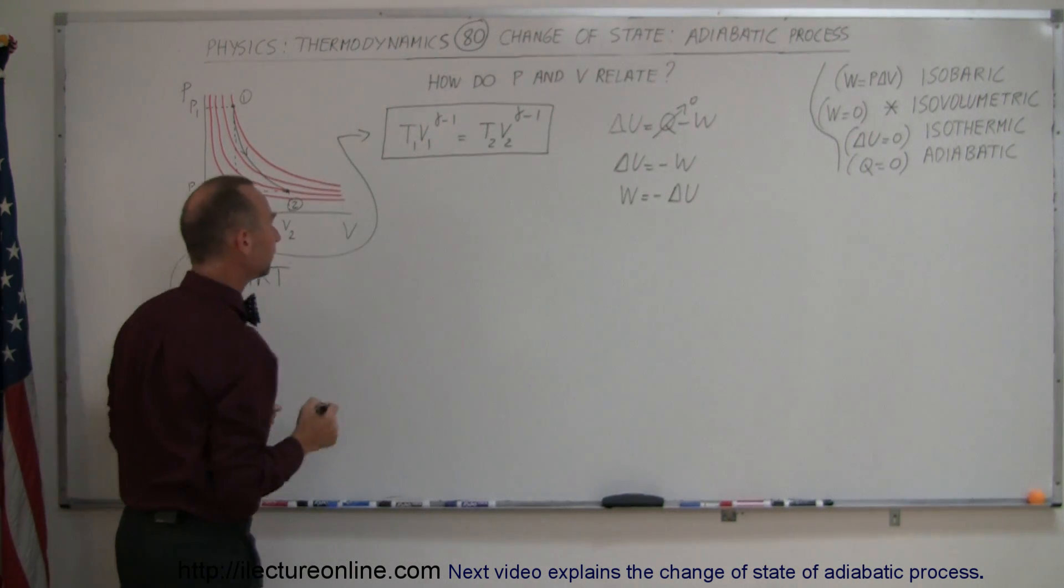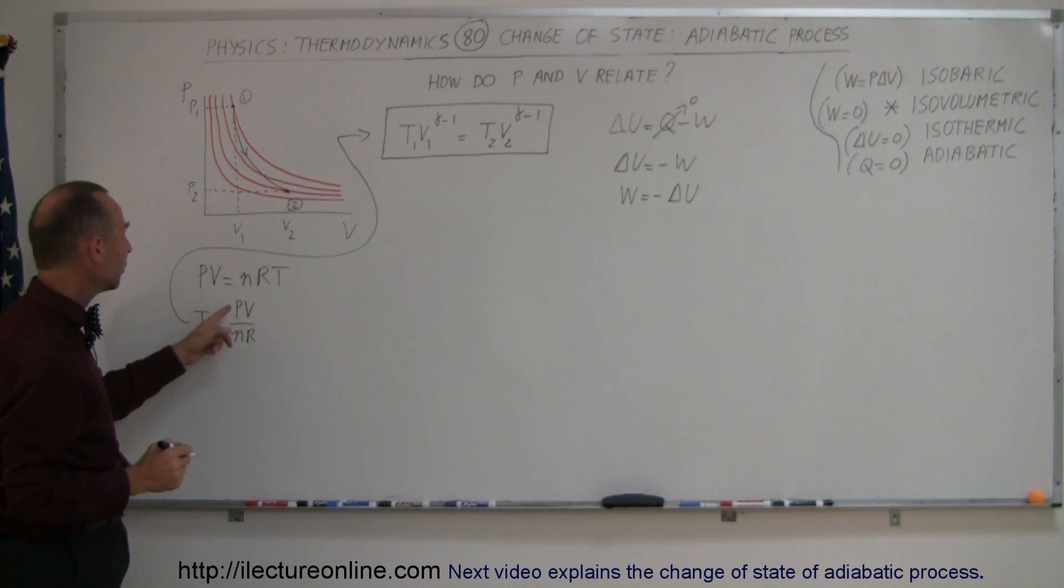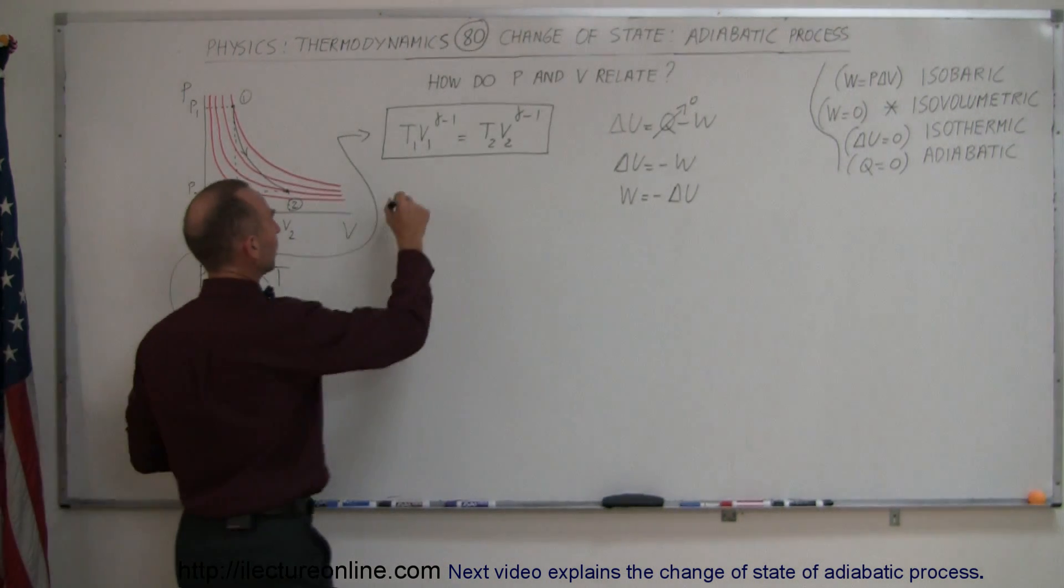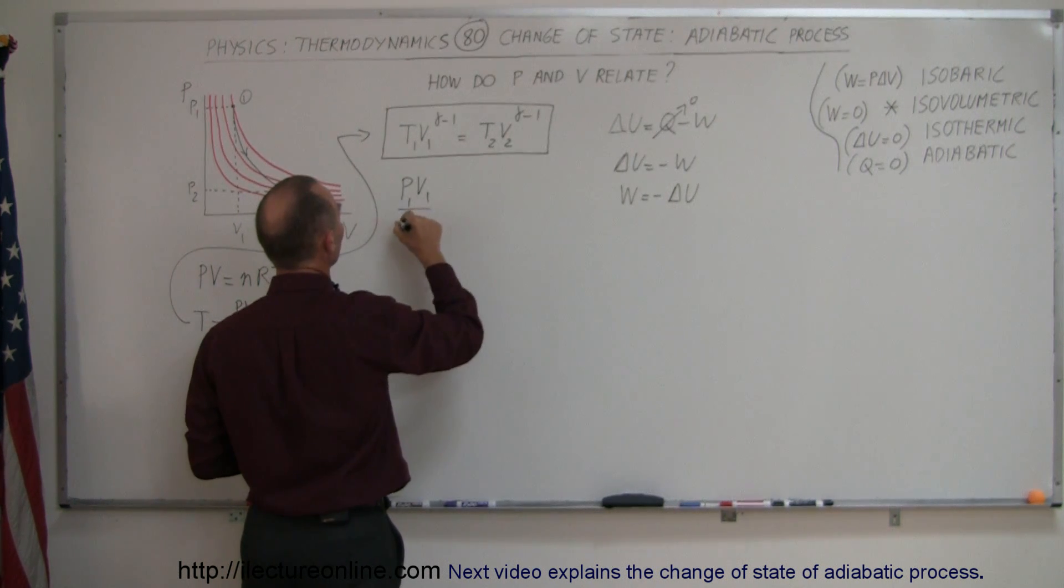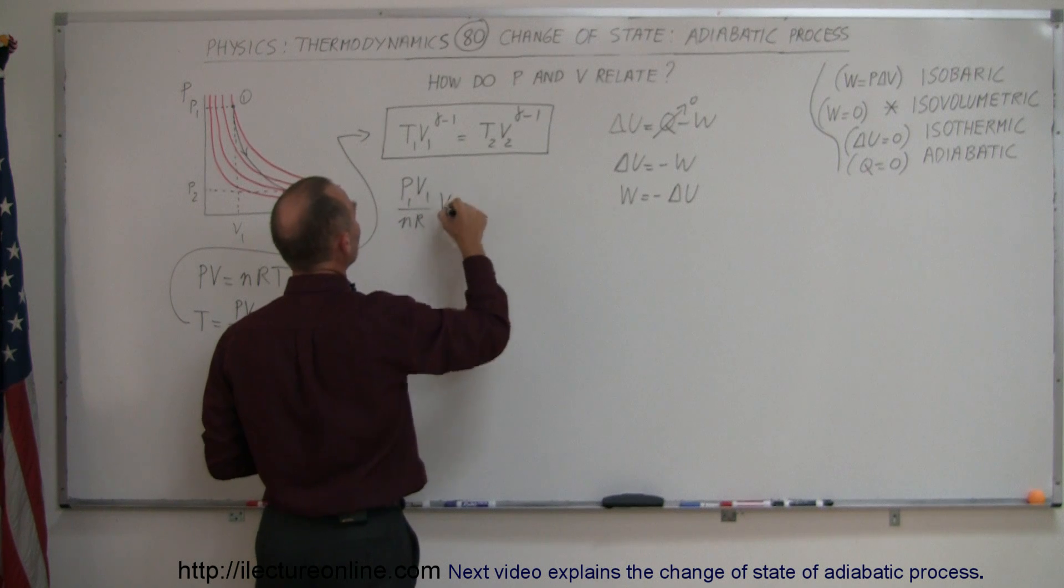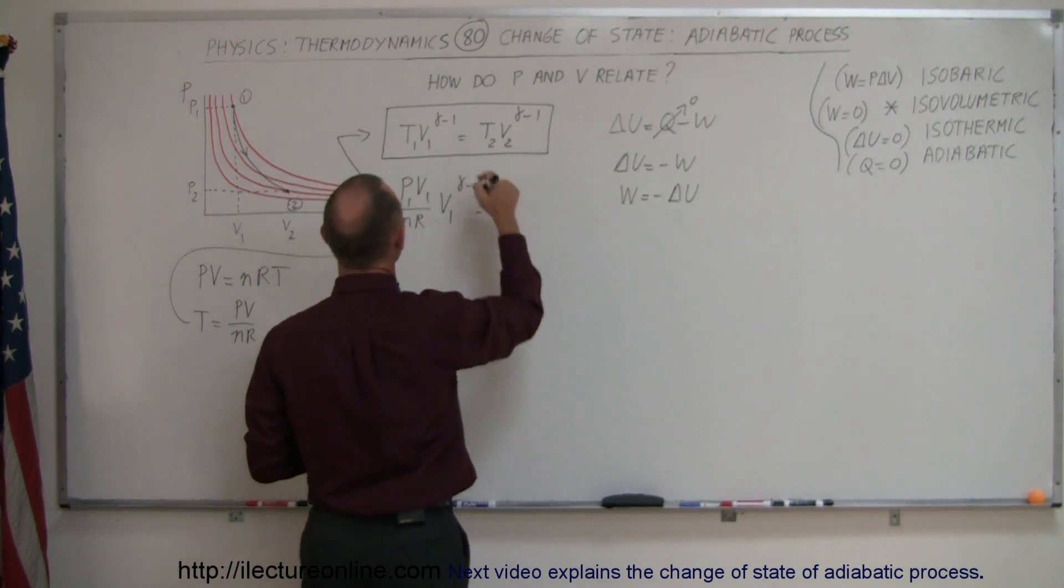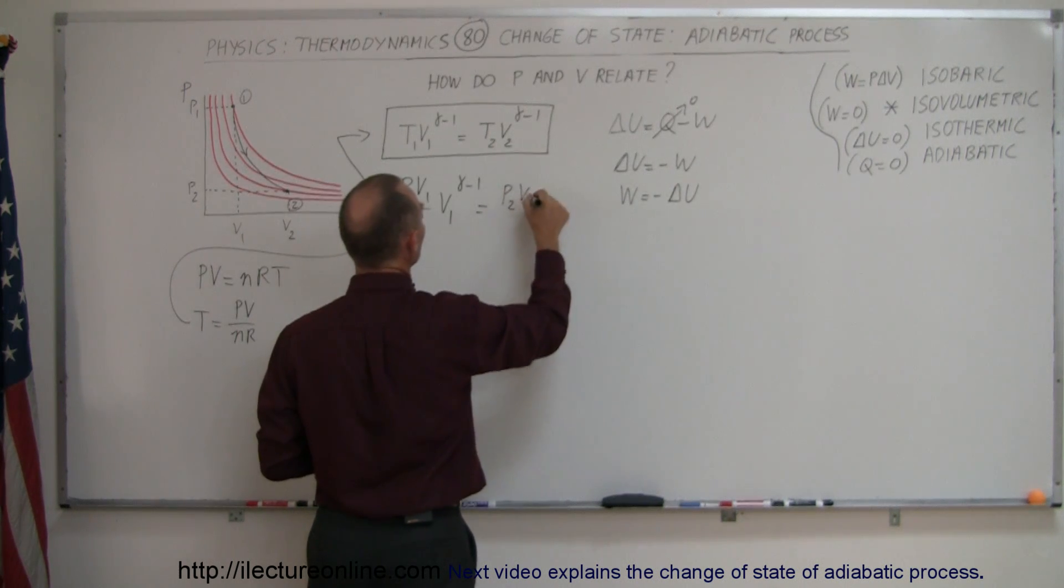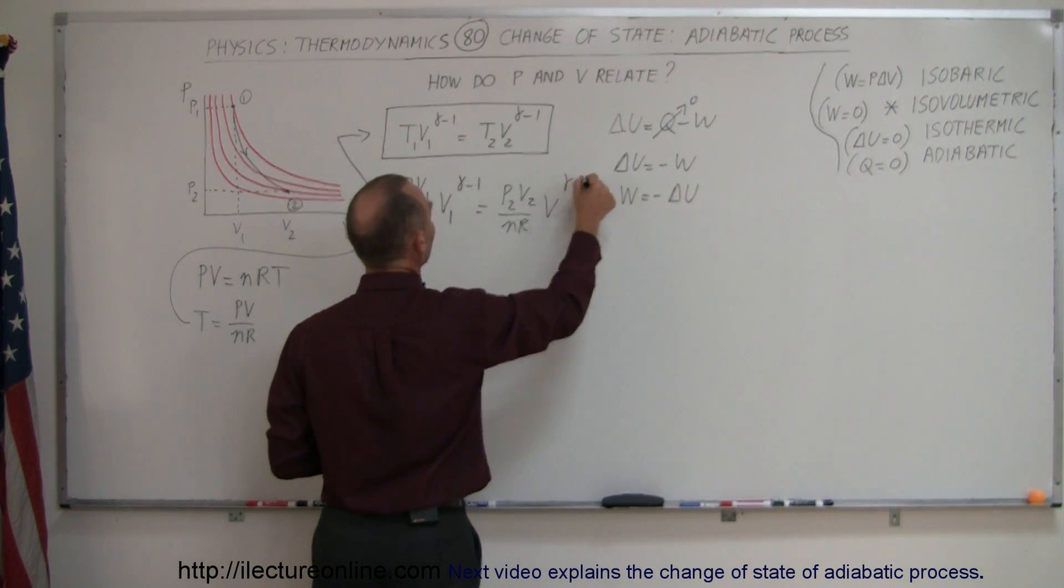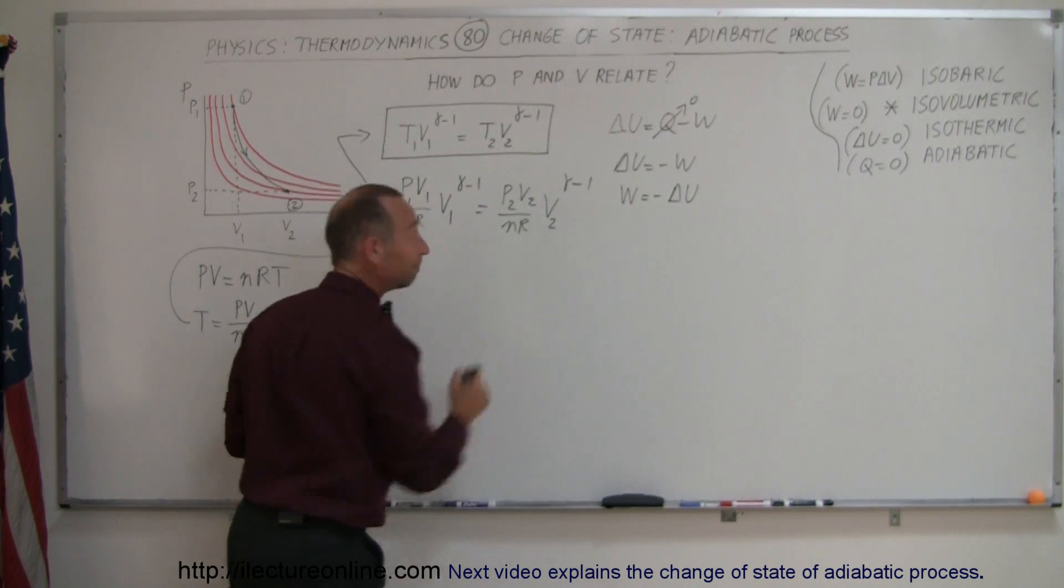Instead of T1 we're going to write P1 V1 over NR times V1 to the gamma minus 1, and instead of T2 we're going to write P2 V2 over NR times V2 to the gamma minus 1.